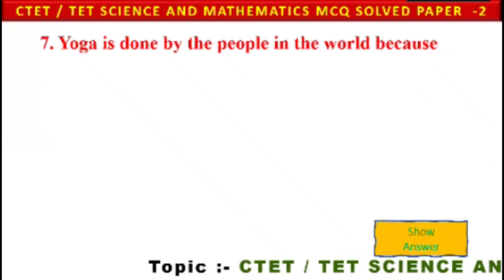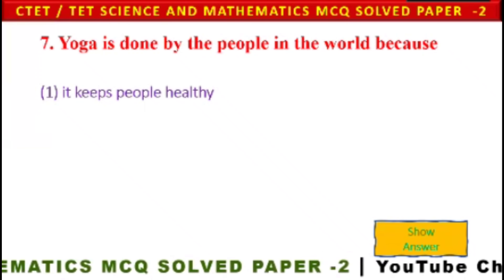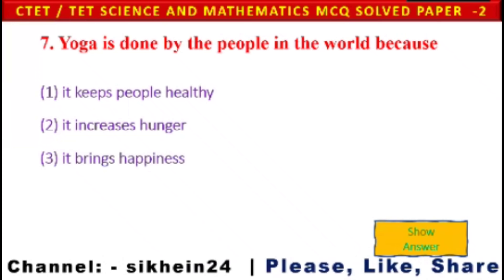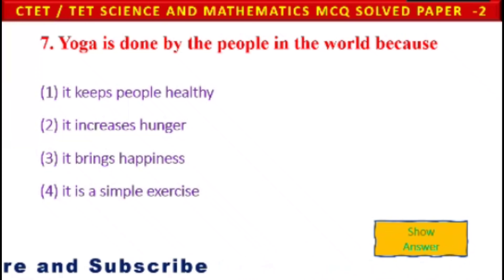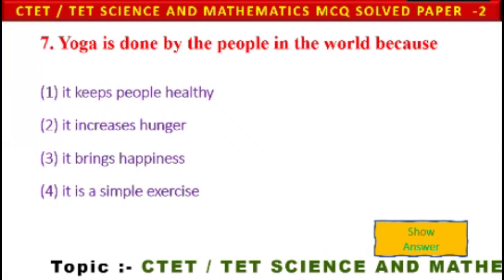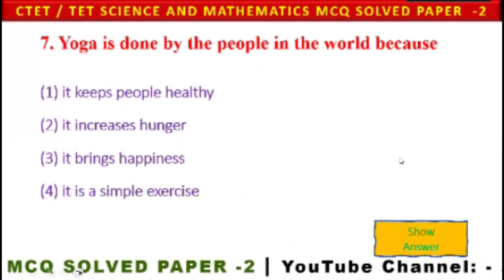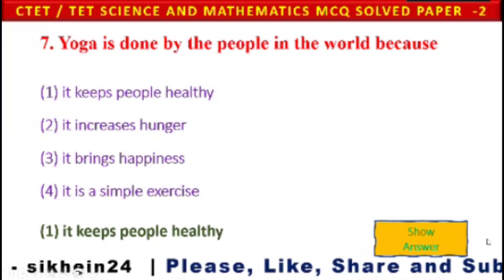Next question: Yoga is done by people in the world because — 1) it keeps people healthy, 2) it increases hunger, 3) it brings happiness, 4) it is a simple exercise. Option 1 is the correct answer — it keeps people healthy.